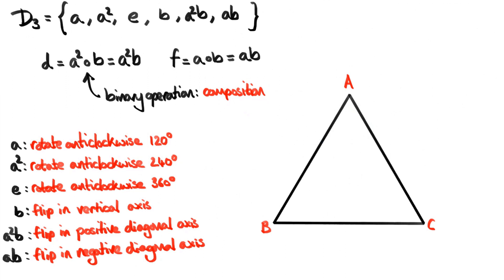In the last video we saw how we could create a group from the symmetries of an equilateral triangle. That group consisted of a set containing the symmetries of the triangle and a binary operation. The binary operation was composition, defined as taking two transformations: performing one first and then the other second. The transformation performed first is on the right of the composition sign, and the transformation performed second is on the left.